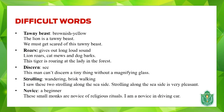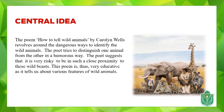There are some difficult words used by the poet. 'Tawny beast' means a brownish-yellow beast — for example, 'the lion is a tawny beast.' 'Roars' means giving out a long loud sound, like the roaring of a lion. 'Discerning' means seeing. 'Strolling' means wandering or a brisk walk. 'Novice' means a beginner or an inexperienced person who does not have knowledge of some particular things.